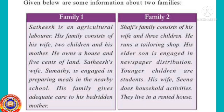The second is Shaji's family. He is a tailor. His family consists of his wife and three children. His elder son is engaged in newspaper distribution. The younger children are students. His wife does household activities. They live in a rented house.